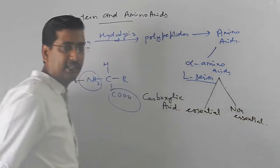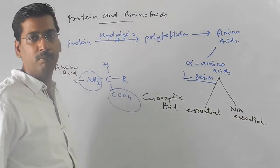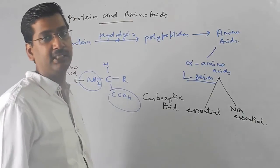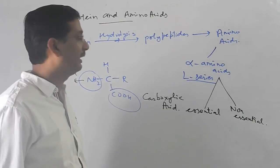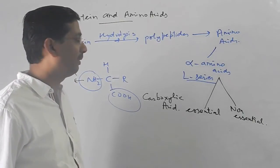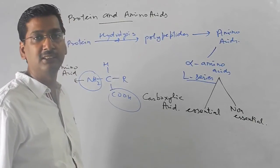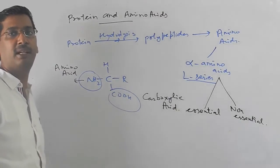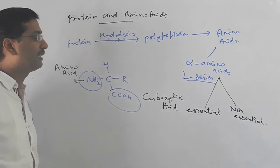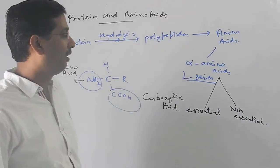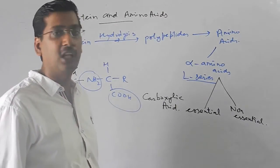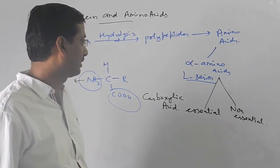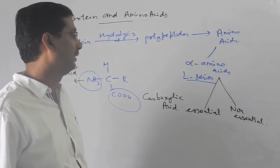Essential amino acids need to be obtained from food. If the body cannot synthesize them, deficiency disease may result. Non-essential amino acids can be synthesized by the body from other amino acids.